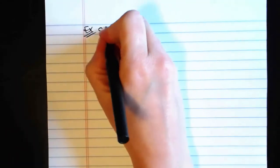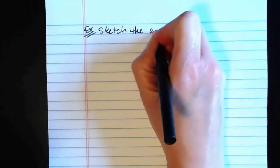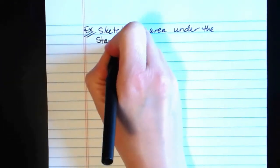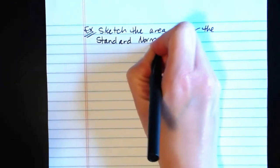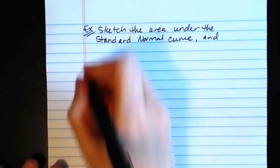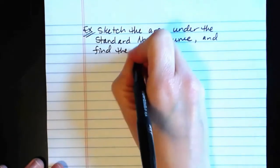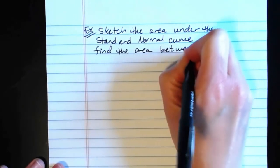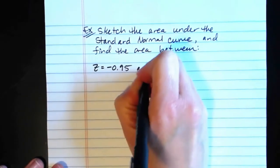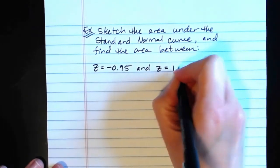Here's an example. We want to sketch the area under the standard normal curve and find the area between z equals negative 0.95 and z equals 1.33.